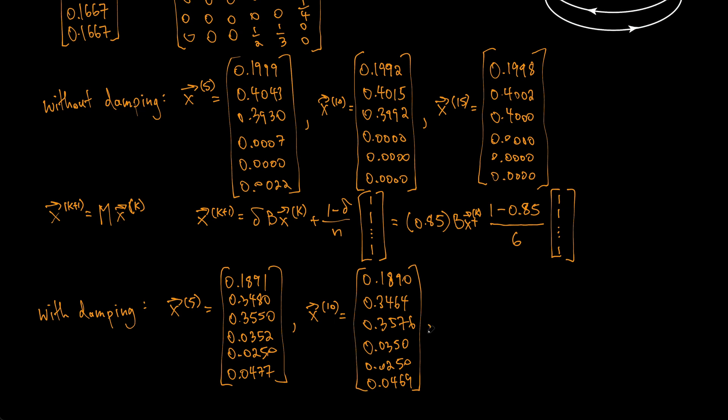And we'll just compare now x15. So even after multiplying by 15 times, we still don't hit 0 in the last three as we're going to see because we have 0.1892, 0.3462, 0.3578, 0.0350, 0.0250, and 0.0469.